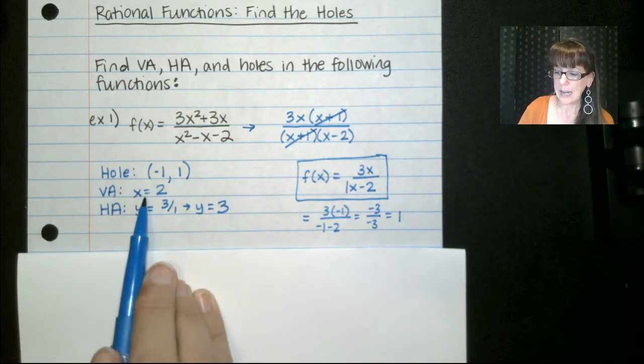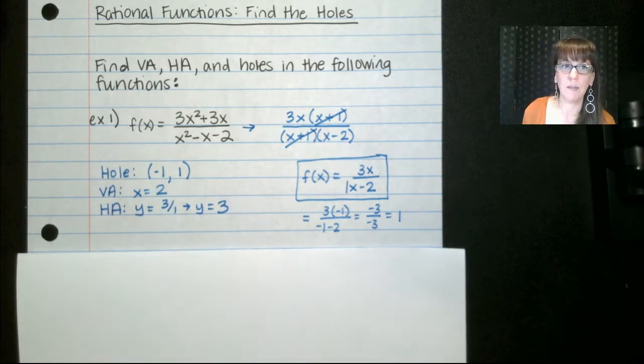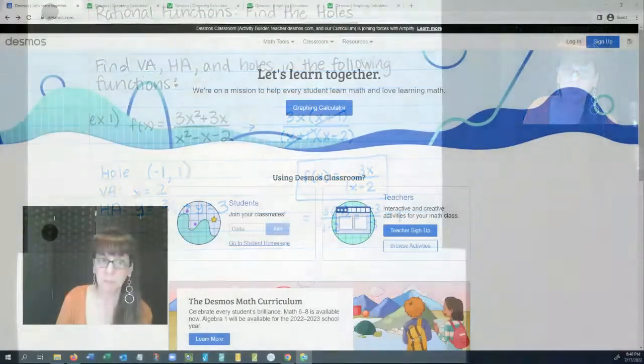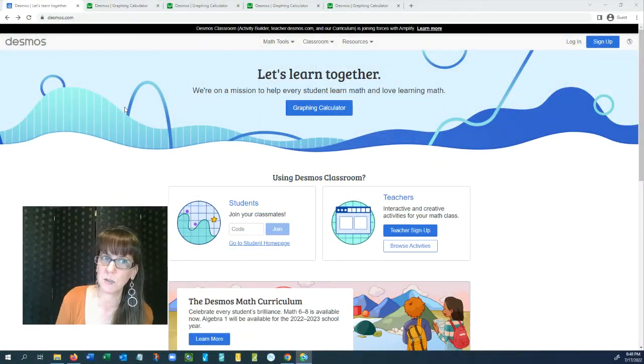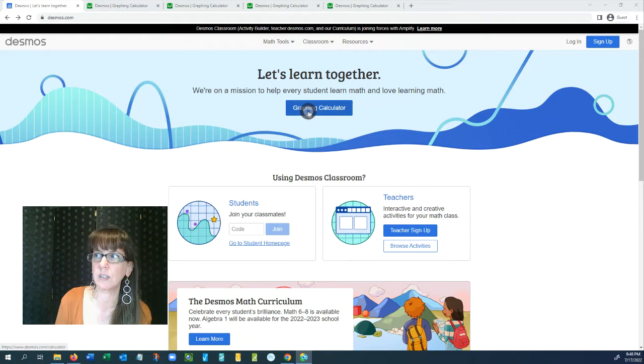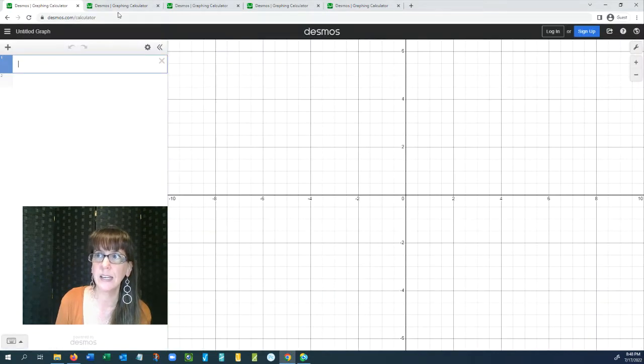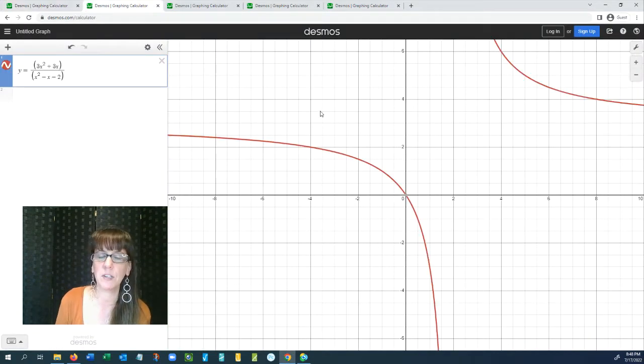So now what we have is a hole, and we have these two vertical and horizontal asymptotes. Now, when we graph this on Desmos, if you go out to Desmos, if you go to the Desmos landing page, you'll see graphing calculator right in the middle. You just click on that, and it'll take you right there. Then you type in your equation or your function, and you'll get this guy.